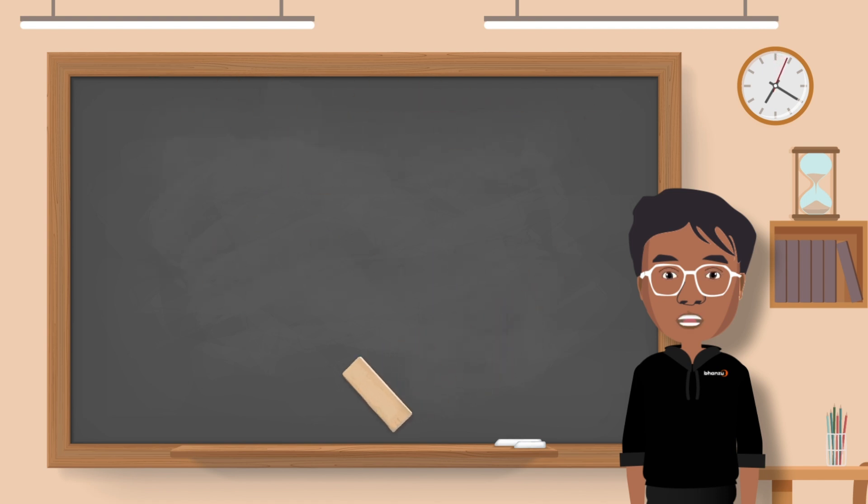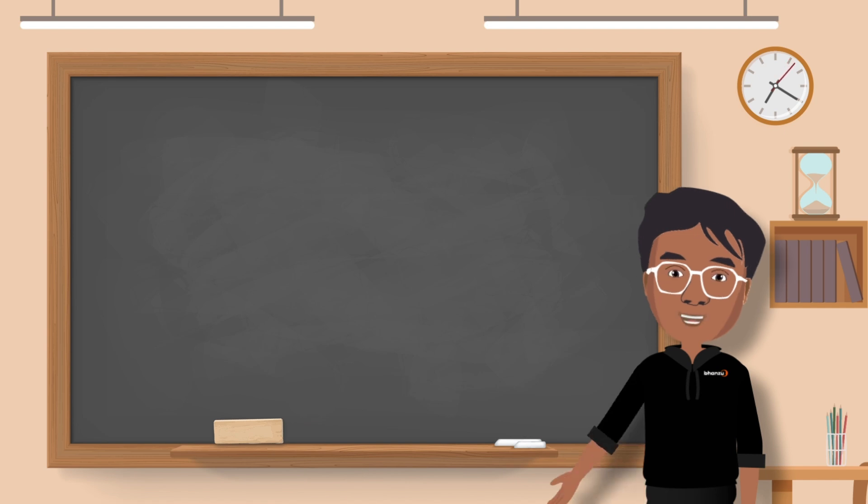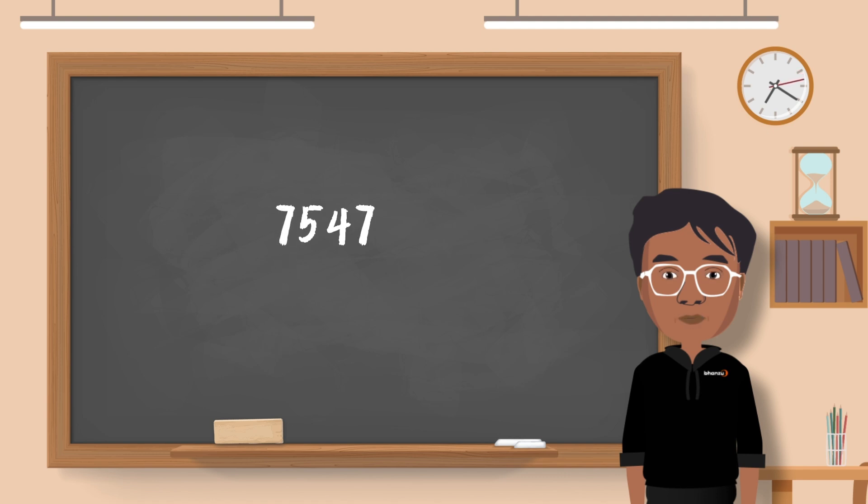The third property is extremely simple and you all know it already. If I give you a big number, say 7547 multiplied by 1, would you know the answer?